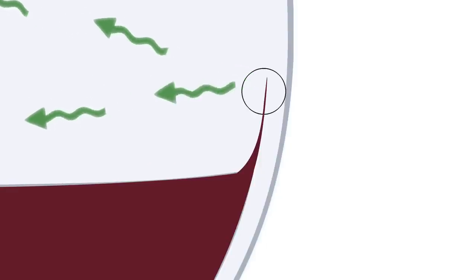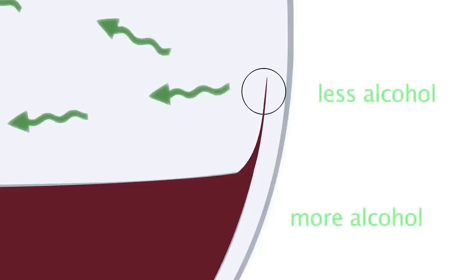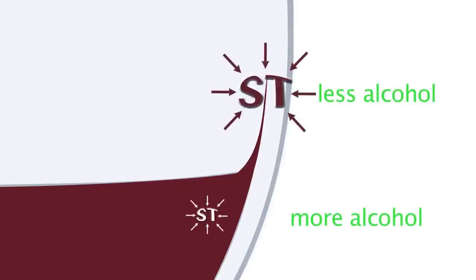That means that compared to the rest of the wine, the wine at the top is actually less alcoholic, and therefore has a higher surface tension. And just like with the pepper flakes, this difference in surface tension will actually pull wine up the side of the glass.